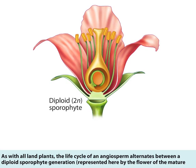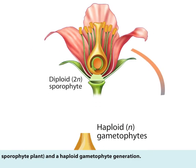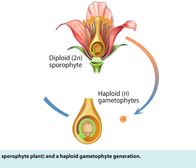As with all land plants, the life cycle of an angiosperm alternates between a diploid sporophyte generation, represented here by the flower of the mature sporophyte plant, and a haploid gametophyte generation.